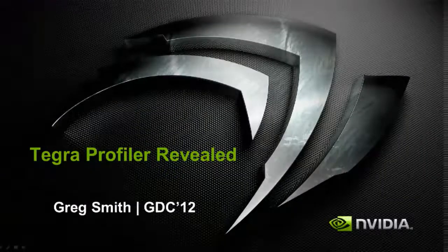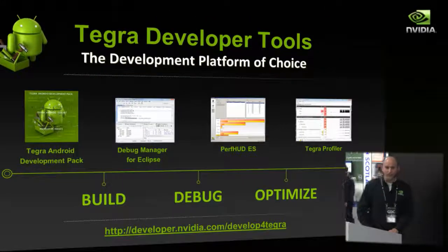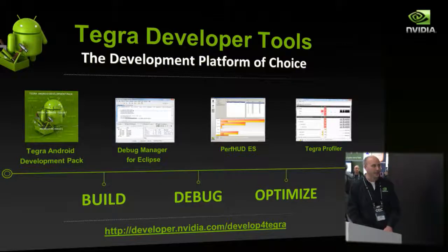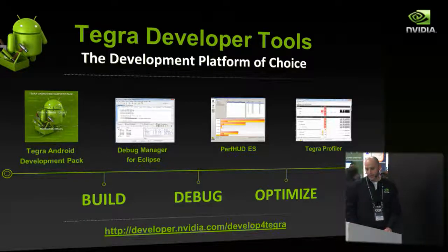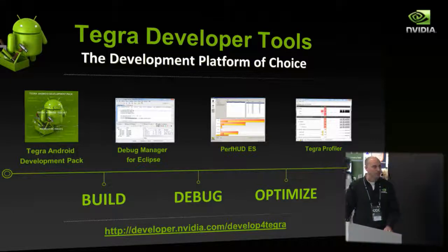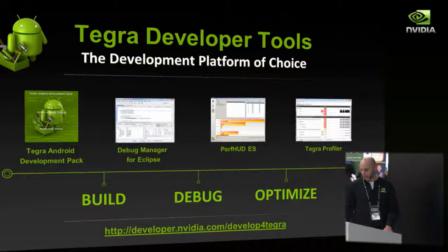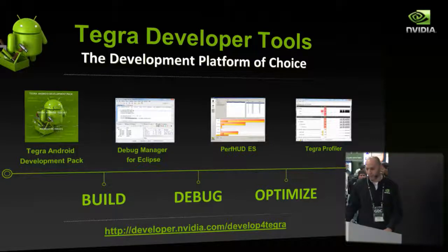This is our new multi-core CPU profiler for Tegra platforms. We offer a number of different tools to help you get started with Android development. We have an Android development pack that will help you get everything installed on your system in minutes, a debug manager in Eclipse for native debugging, a graphics performance analyzer and debugger for OpenGL ES, and a Tegra profiler that can look at the new four-core Tegra CPU.